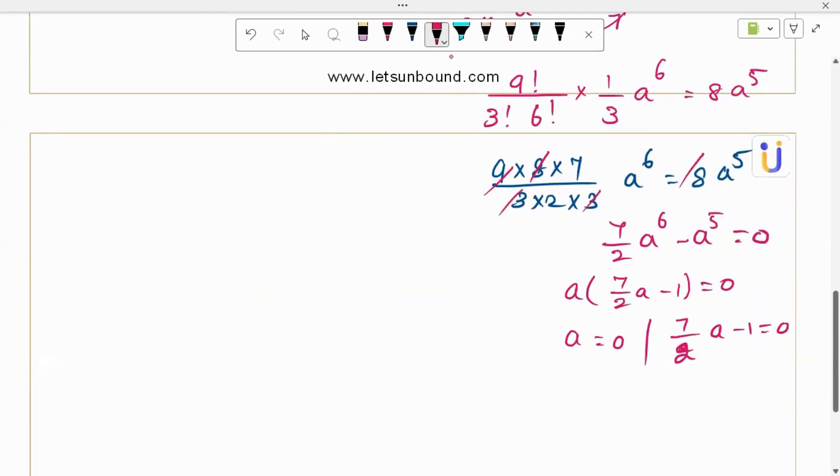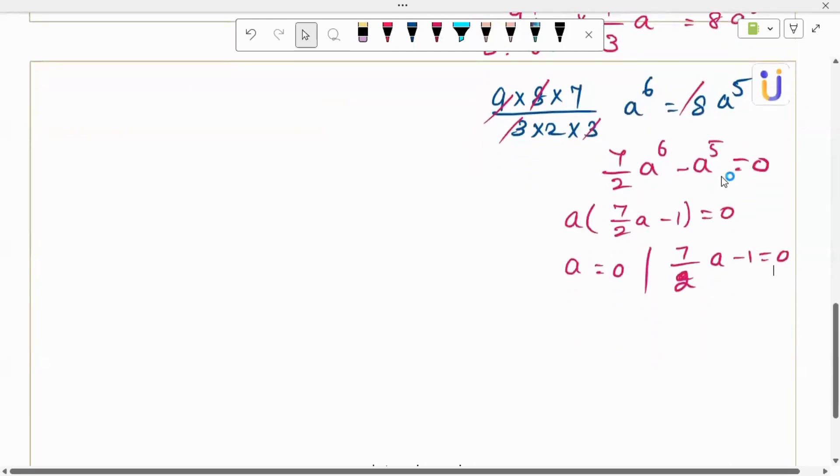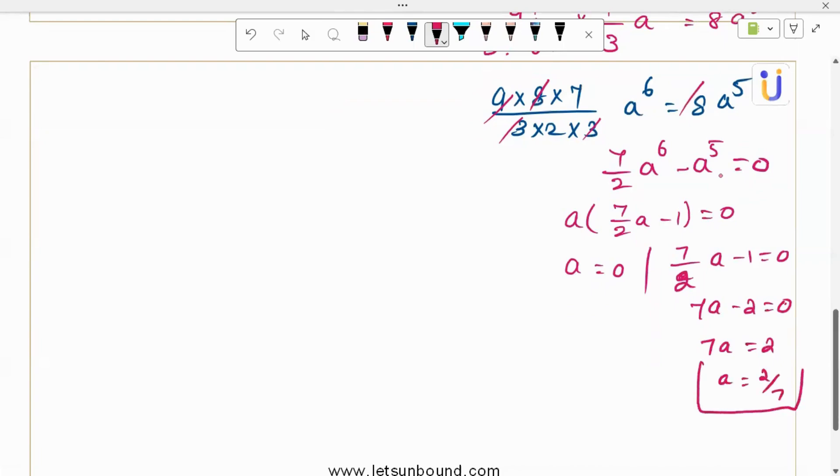7 by 2 a power 6. And then 7a minus 2 equals 0. 7a is 2. a is 2 over 7. And they said clearly a not equal 0. So we ignored it. And my a value is 2 by 7. So we discovered this solution.